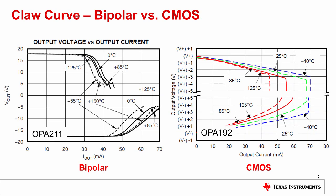Now we'll compare the claw curve for a bipolar amplifier to a CMOS amplifier. Notice that the CMOS curves have a much steeper slope than those of the bipolar device. This is because the output resistance of a CMOS stage is generally larger than that of a bipolar device for an equivalent collector or drain current. As these curves prove, the output swing of bipolar amplifiers is generally less affected by loading. With either type of amplifier, remember to give yourself enough distance from the claw curve to ensure linear operation.